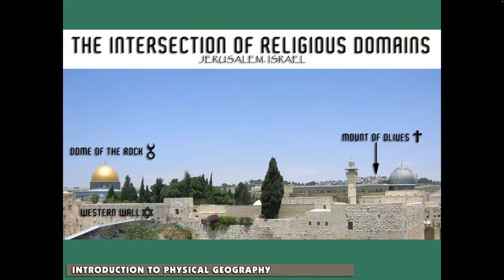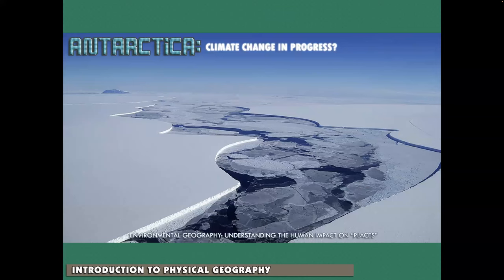While religion may not be physical geography, it is a study of geography — the intersection of religious domains. If you ever get a chance to go to Israel, it is historically fascinating and a beautiful place. Antarctica is a place most of us will probably never get to go to. However, it is significant for understanding climate change and how places are connected, because this huge ice cap at the southern end of the world has a significant impact on climate globally.